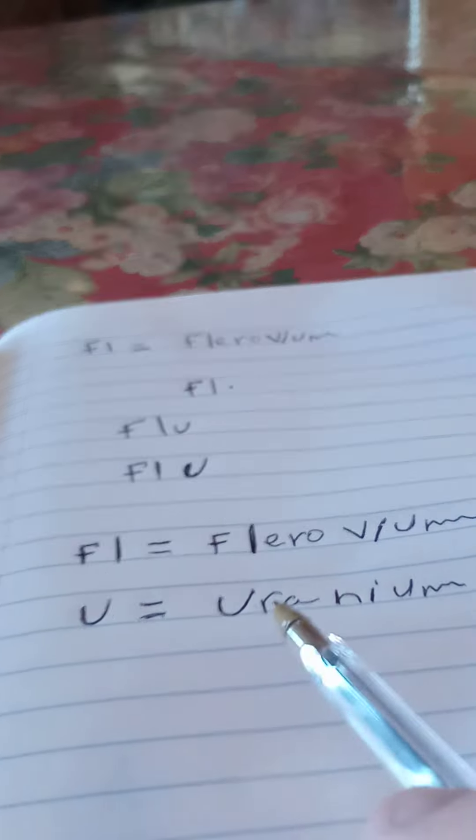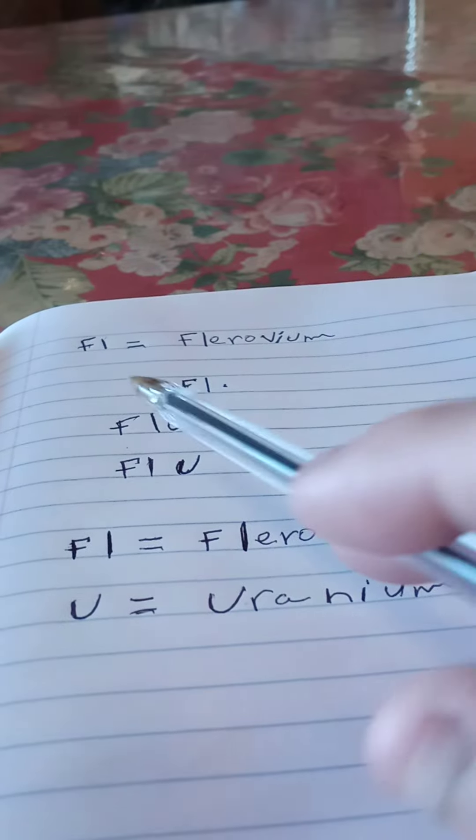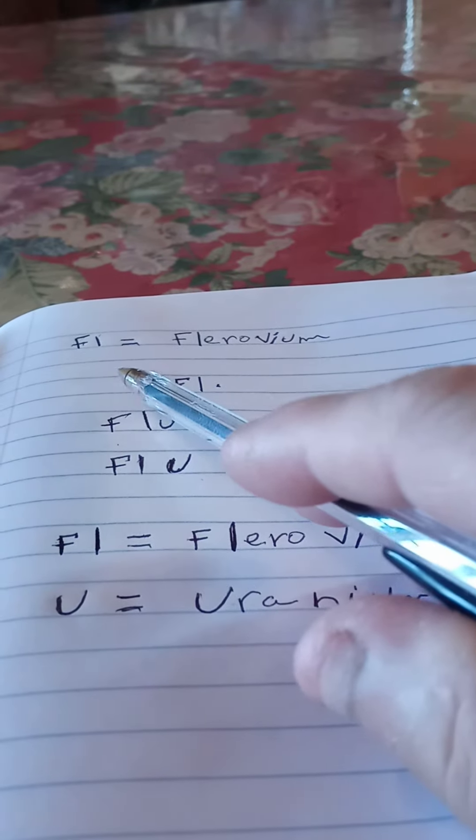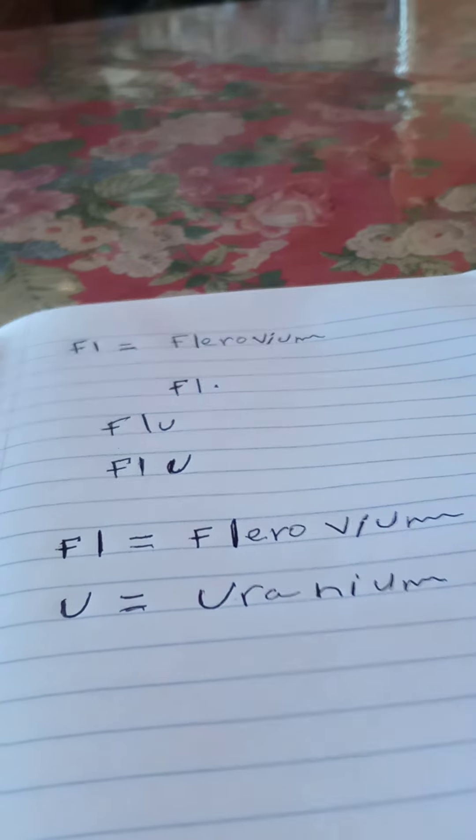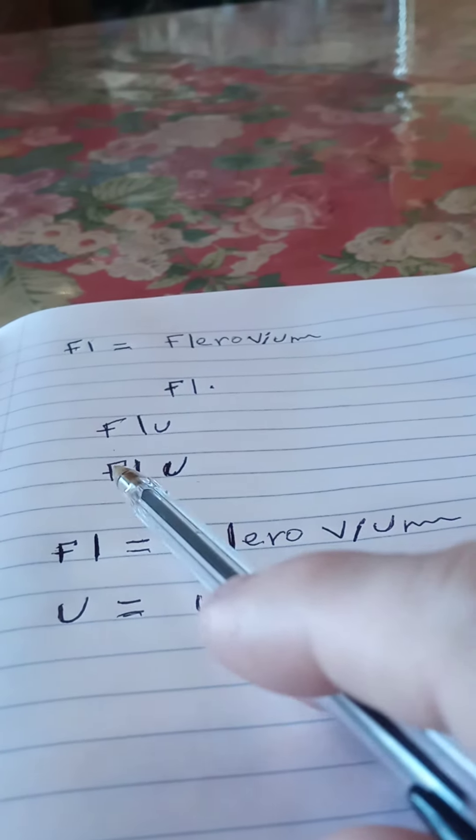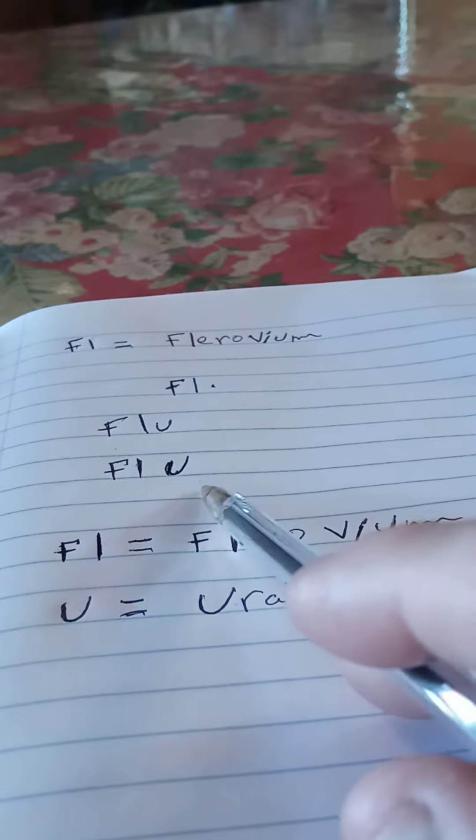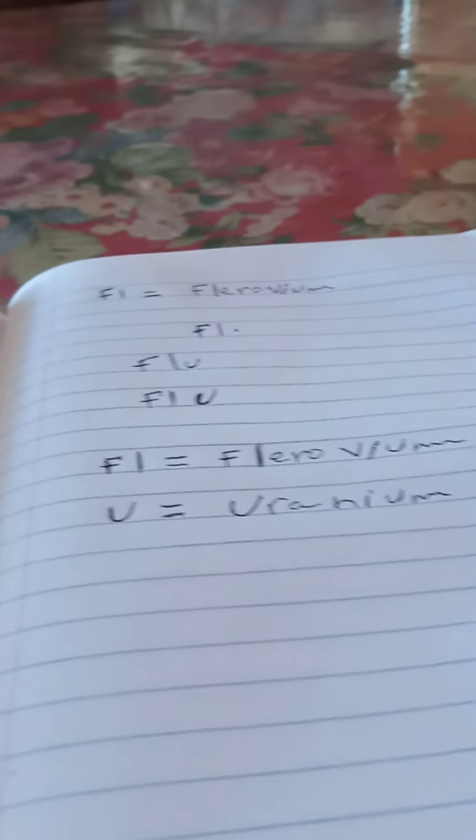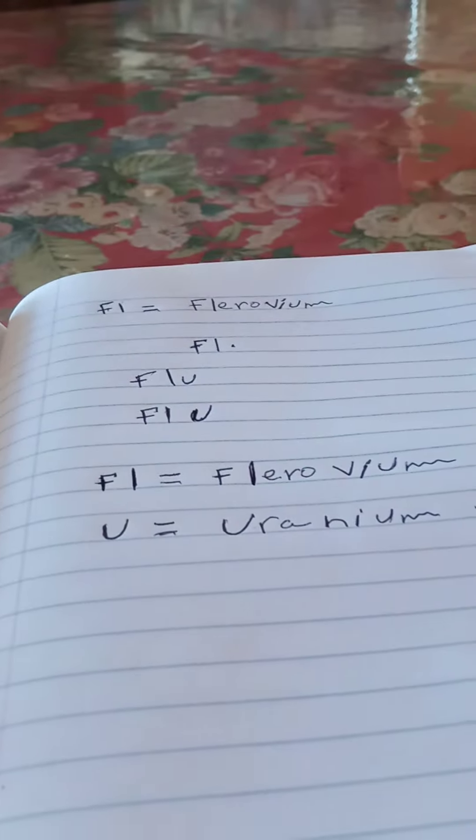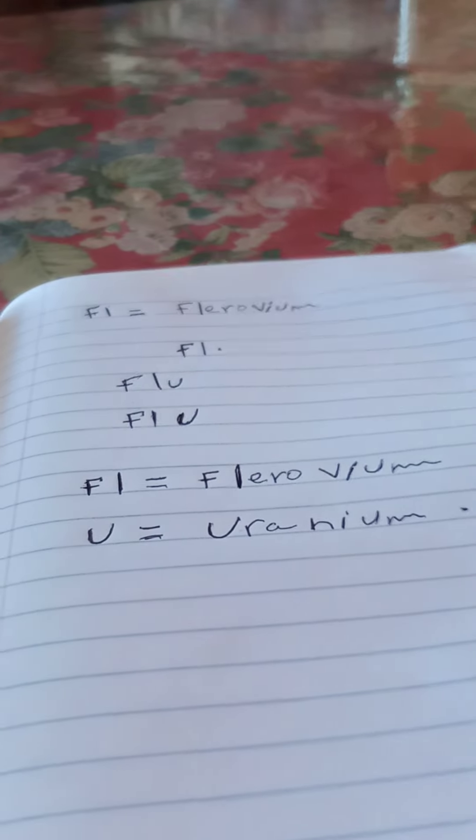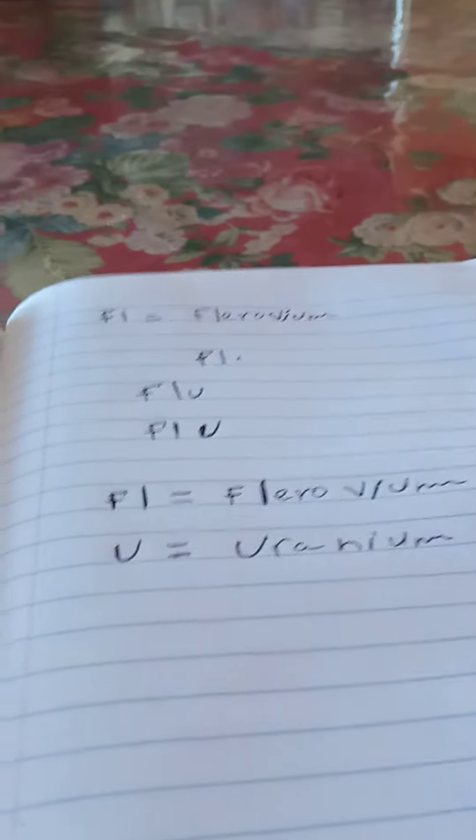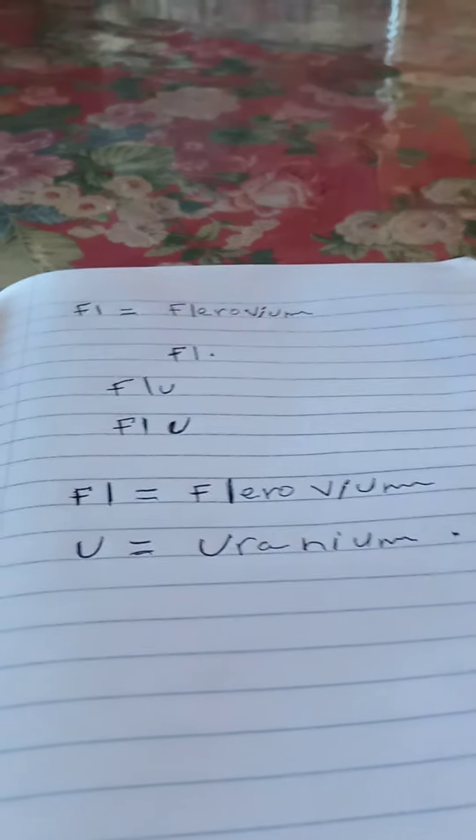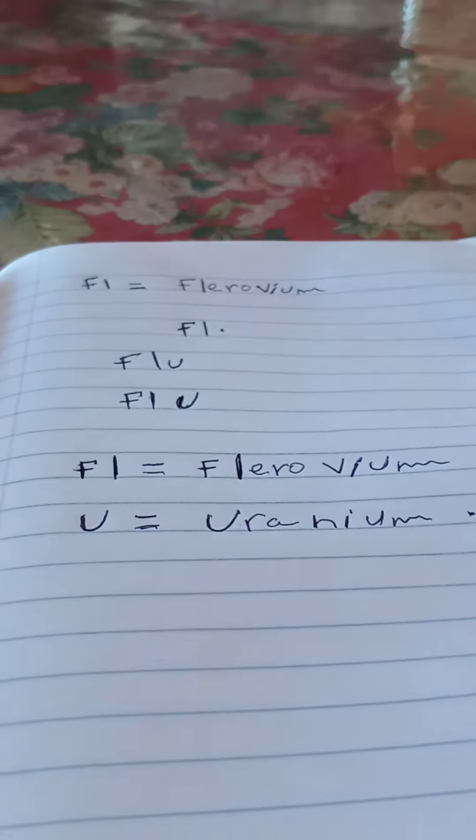A good way to remember that capital F and lowercase L equals Fluorovium is the word flu - capital F, lowercase L, and capital U. There you go. Just another way for you to remember this chemical symbol. Have a good day, bye-bye.